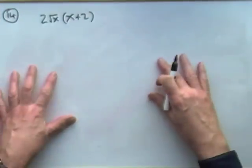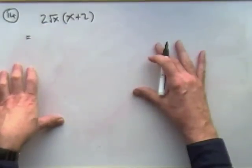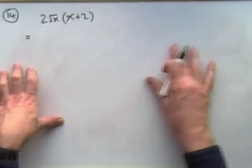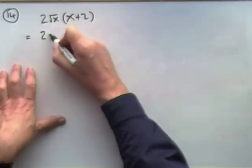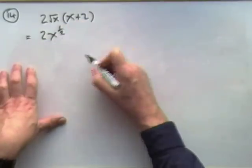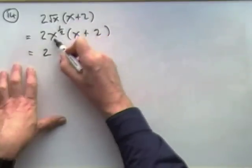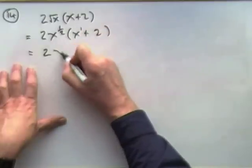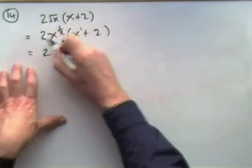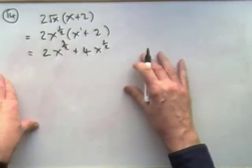Question 14: differentiate this with respect to x. First, get it in a suitable form — you need separate terms, no roots or denominators, just index form. Rewrite in index form, then multiply it out: 2 times x to the half times x gives 2x to the three-halves; the other term is 4x to the half.